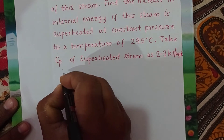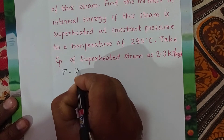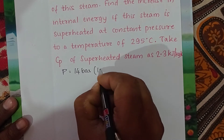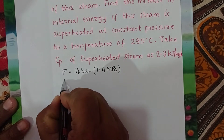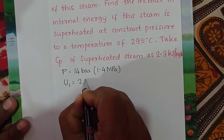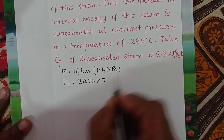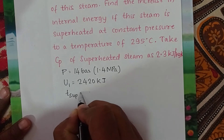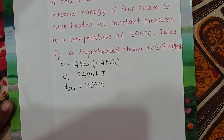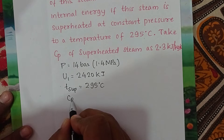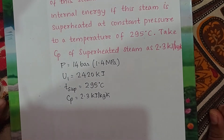The given values are: pressure P = 14 bar (1.4 MPa), internal energy U1 = 2420 kJ, superheated temperature T_sup = 295°C, and the specific heat of superheated steam Cp = 2.3 kJ/kg·K. These are the things given in the problem.